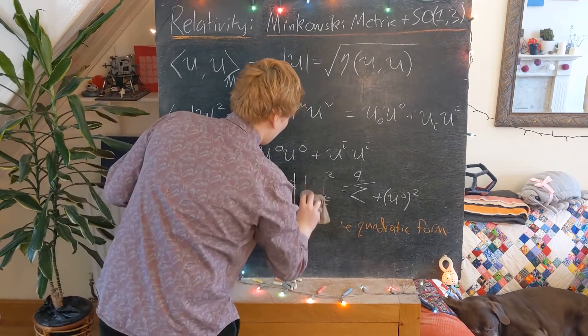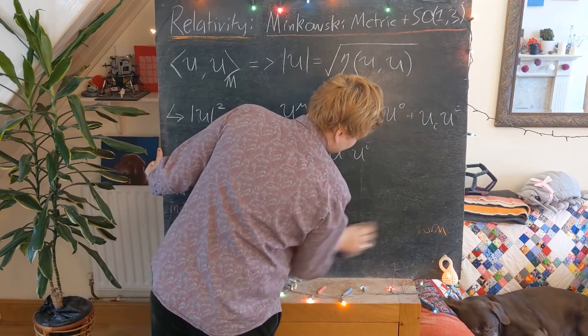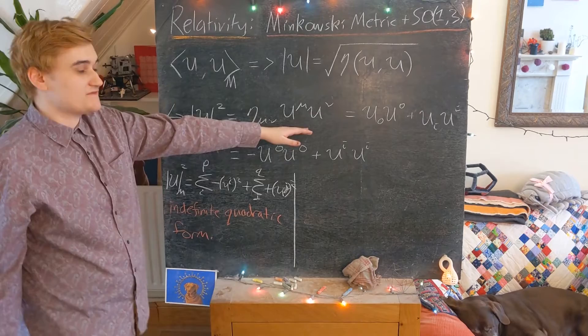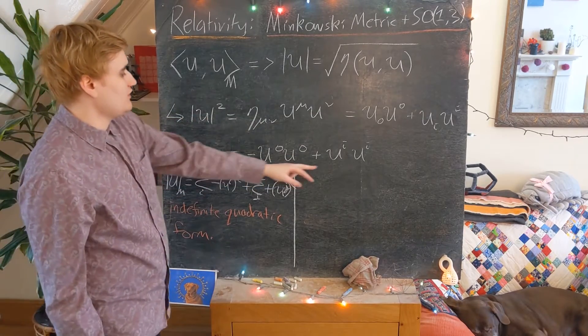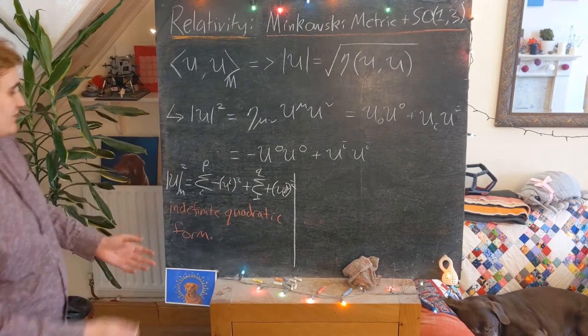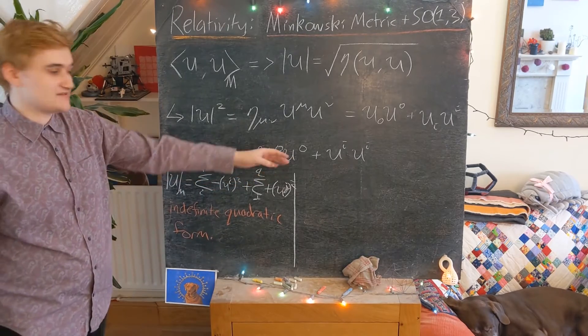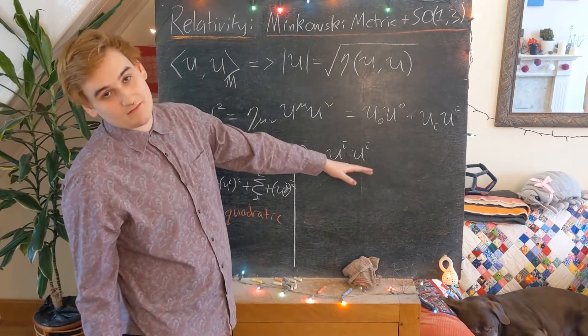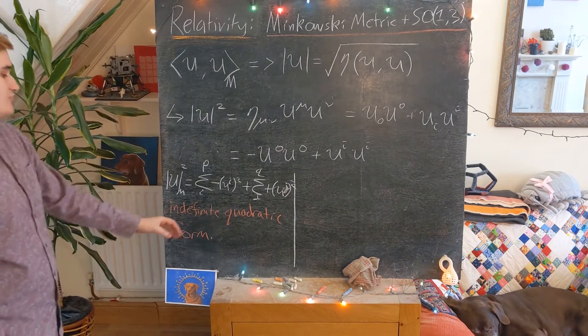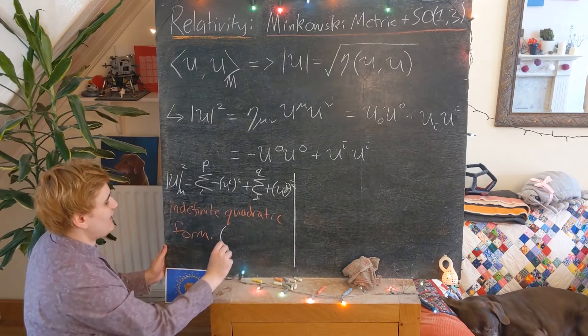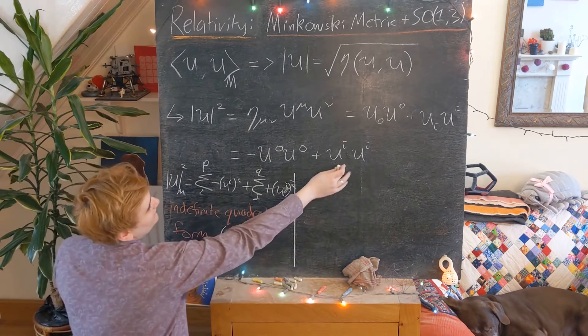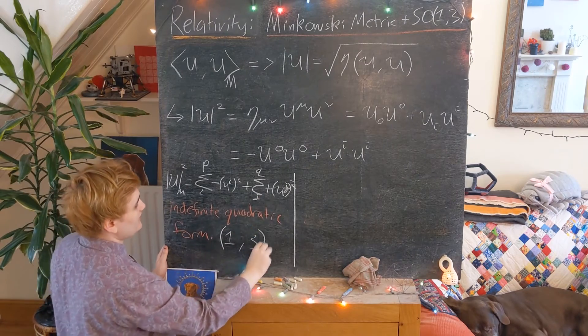So I'll just rub out our definite one for now. We can now realize our Minkowski inner product. We have its expression written here. So we can see we've got one minus and then three pluses. So we would then say that our quadratic form is going to have signature p is one and q, the number of pluses, is three.